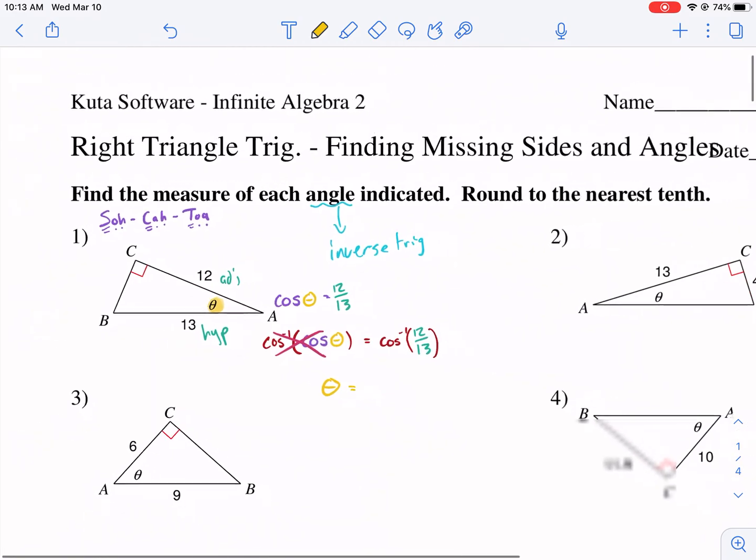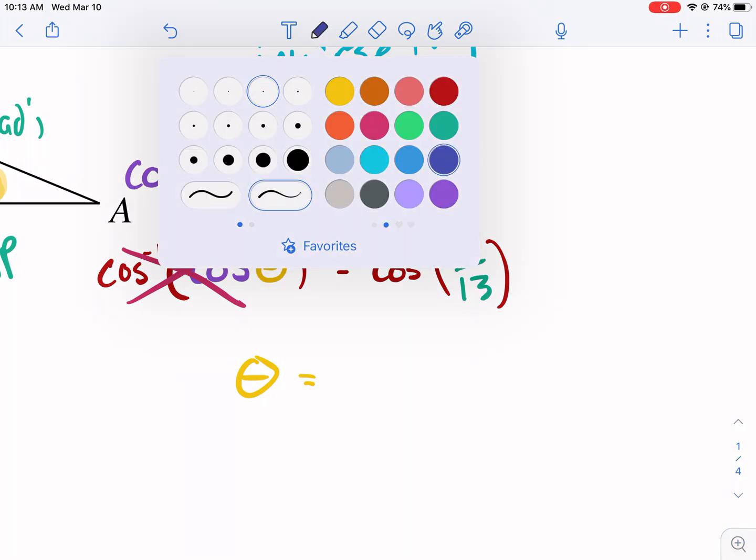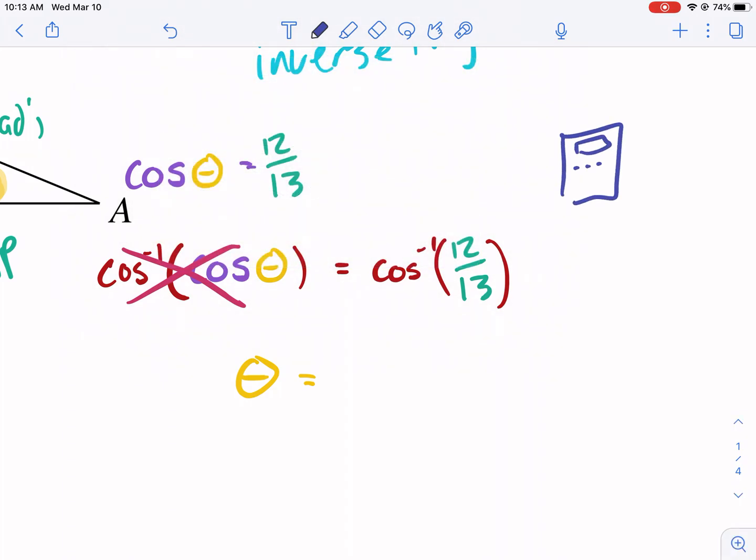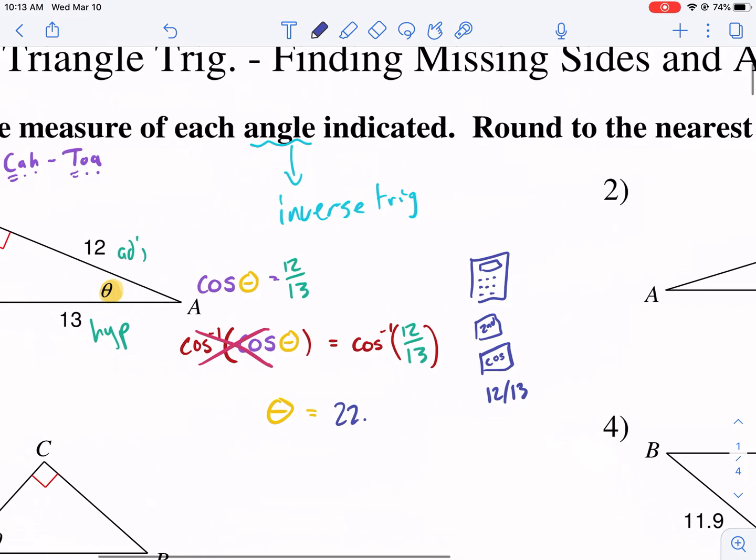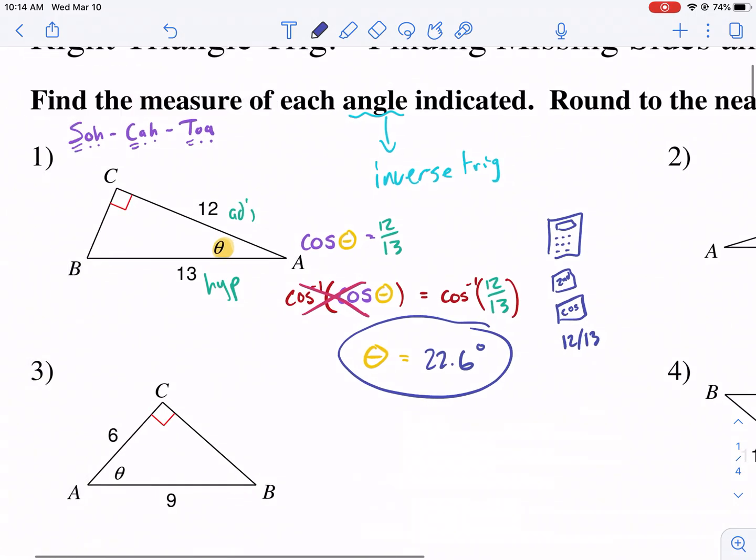I think it's asking for degrees. Find the measure of each angle indicated. I'm pretty sure it's wanting degrees, so we're going to assume for this exercise we're going to do degrees. I'm going to go inverse cosine. Usually you have to hit the second key, then the cosine button. You just type in 12 divided by 13 on your calculator, and you're going to get 22.6 degrees. That's our answer. We found our missing angle, which is 22.6 degrees.